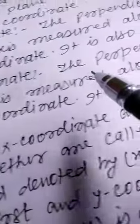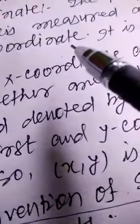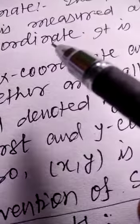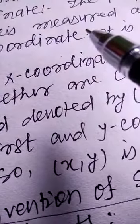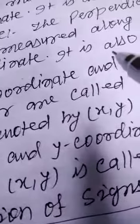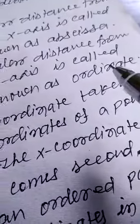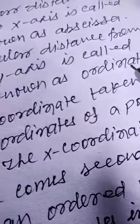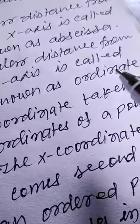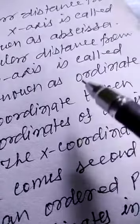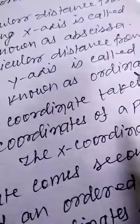The y-coordinate is the perpendicular distance from the x-axis measured along the y-axis. When we measure the distance of a point from the x-axis along the y-axis, that is called the y-coordinate. It is also known as ordinate. So, x-coordinate's special name is abscissa and y-coordinate's special name is ordinate.